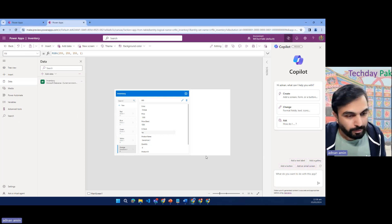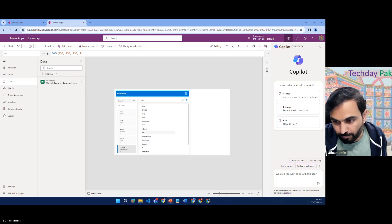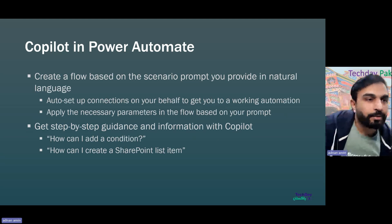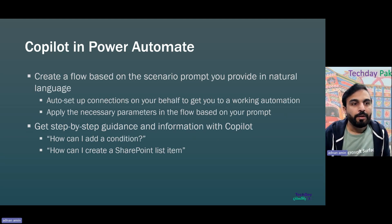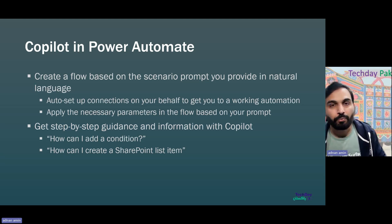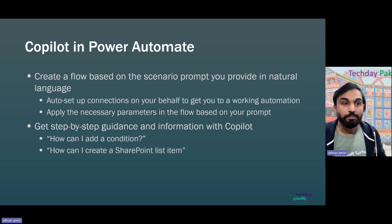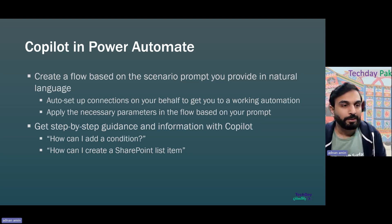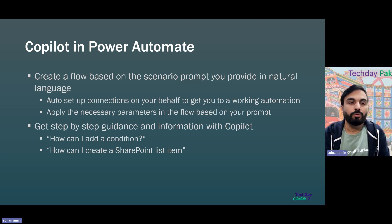Now we'll go to Copilots in Power Automate — how you can create a flow based on a scenario using natural language. Copilot will auto-set the connections of required components and configure variables within the applications. If you need step-by-step guidance while working — for example, how to add a condition, send an email, or create a list item — Copilot will give you the steps to do those jobs.